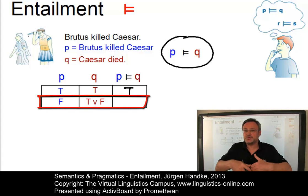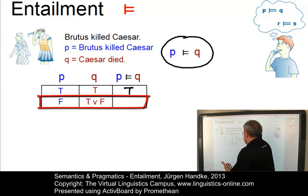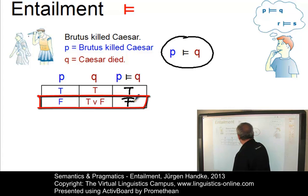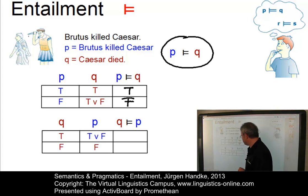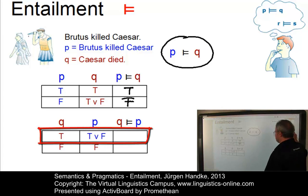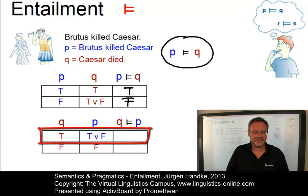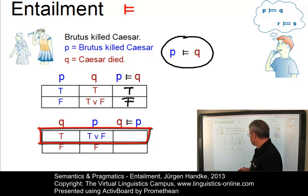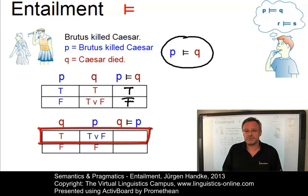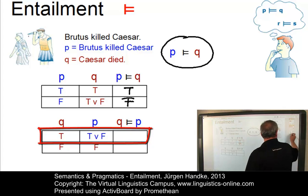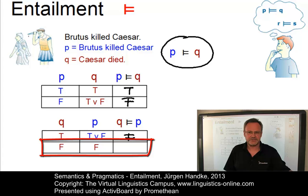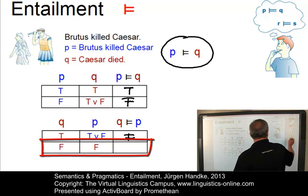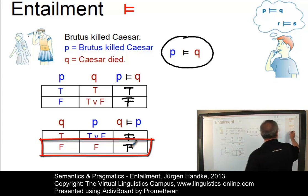If P is false — if Brutus did not kill Caesar — then Caesar may be dead for any other reason or Caesar may still be alive. So P does not entail Q. Now consider the other way around: Q versus P, so Q entails P. If Q is true, meaning Caesar is really dead, we cannot really tell anything about P — Brutus may have killed Caesar, but it could also have been any other person. So this is clearly no entailment relationship. And if both are false — if Caesar is not dead — then no one can have killed him, so the entailment relationship is also not valid here.